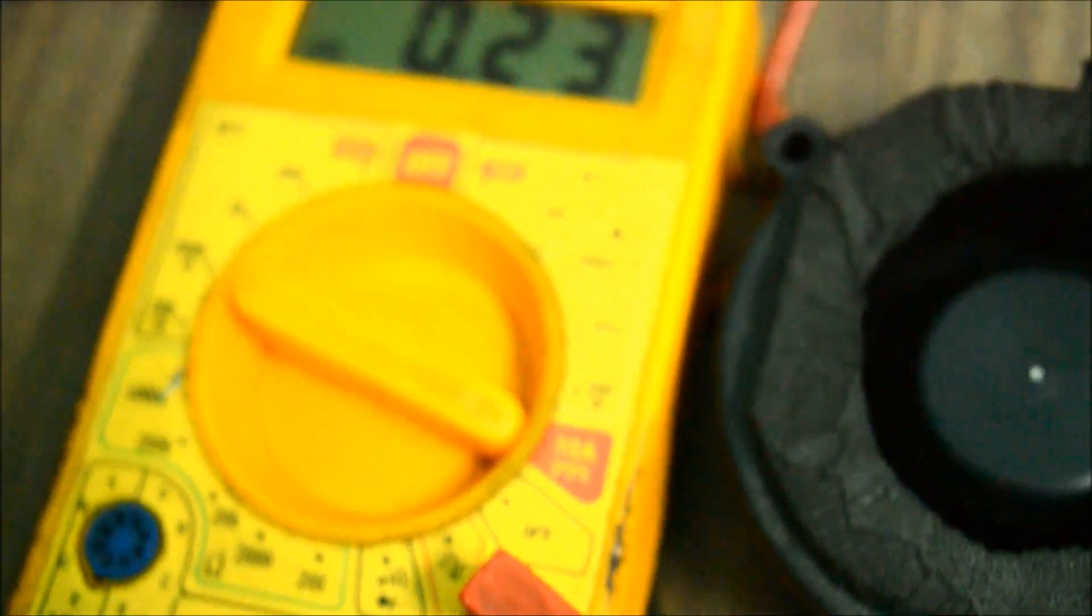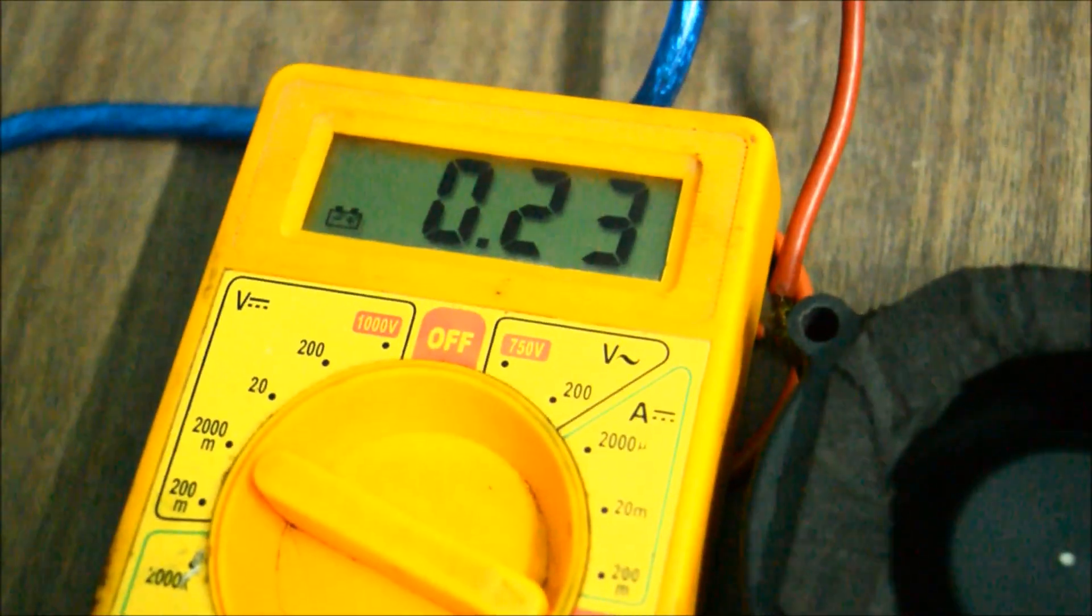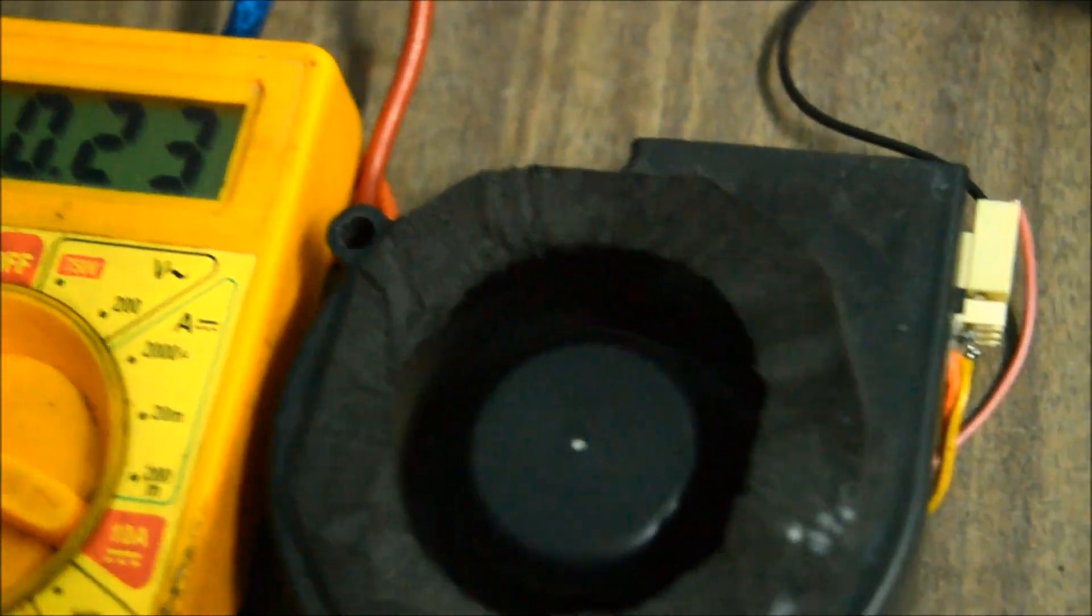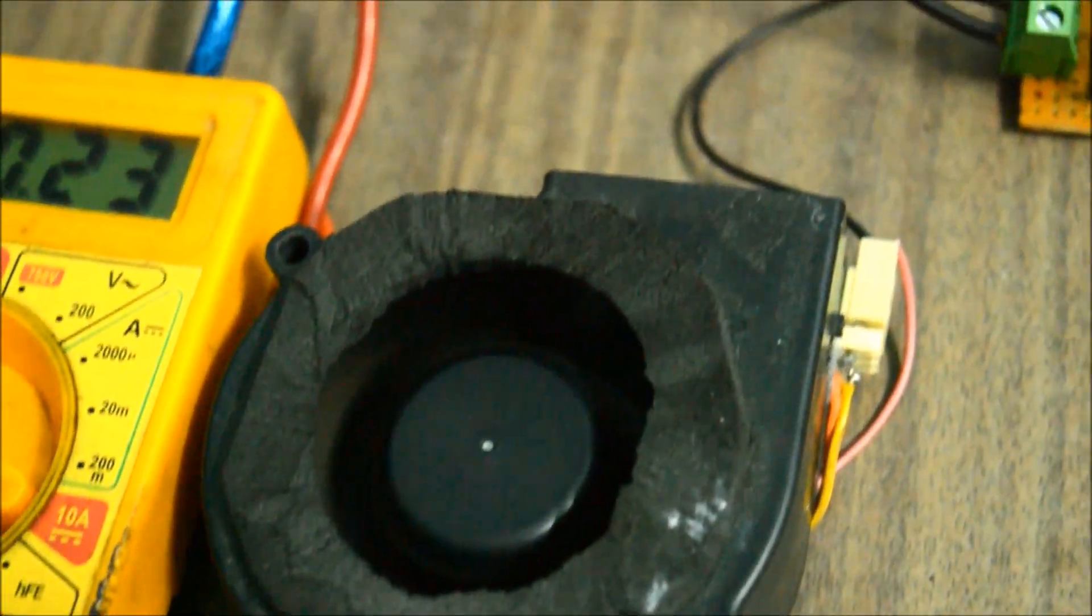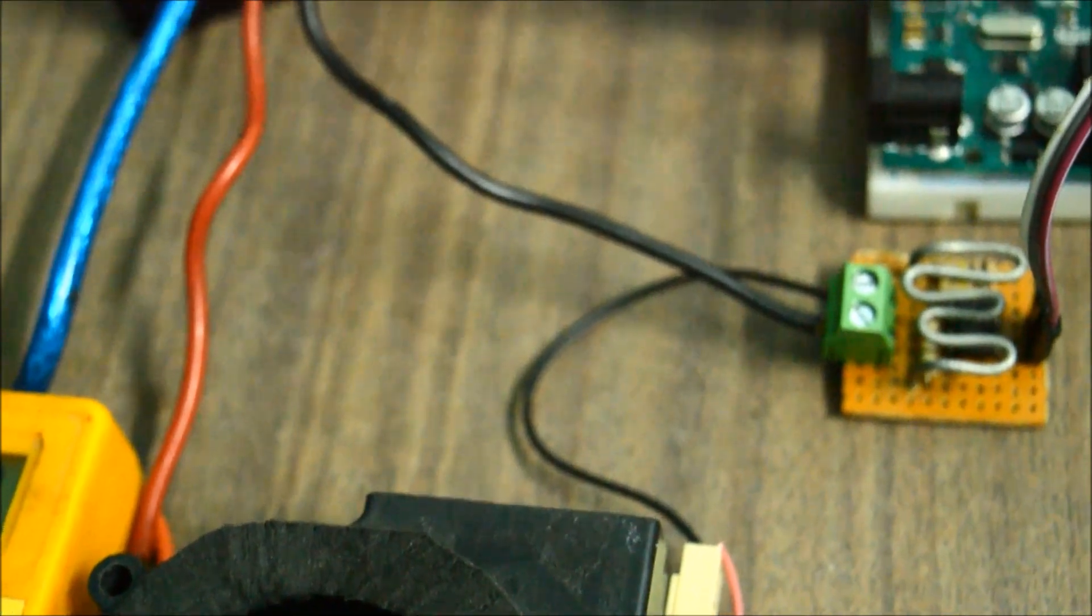This is the DC small exhaust fan load, and as you can see from my multimeter, the current reading I am taking is around 230 milliamps or 0.23 amps. Let's compare this reading with that of the measured one with the Arduino.